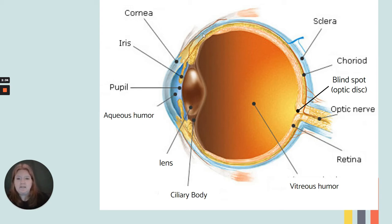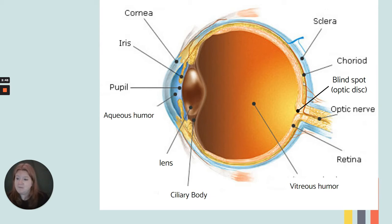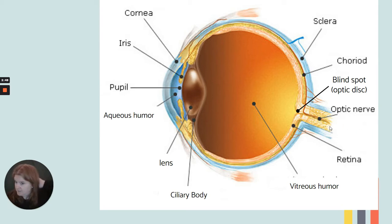The sclera is the white part of the eye. The choroid is a thin layer between the sclera and the retina, and it provides blood flow to deliver nutrients to all the parts of the eye. The optic nerve goes to the occipital lobe of the brain to help us interpret vision.